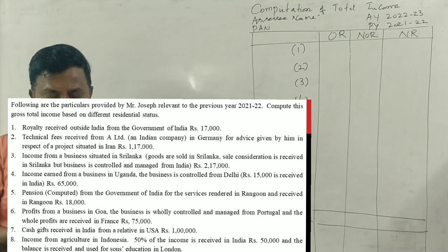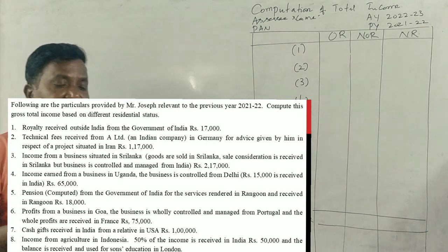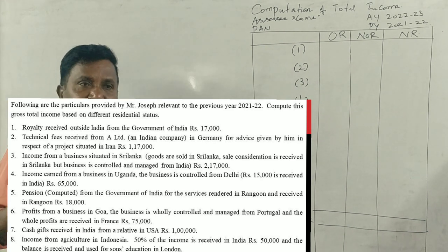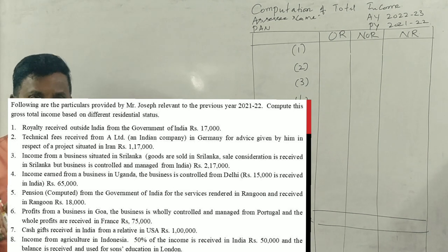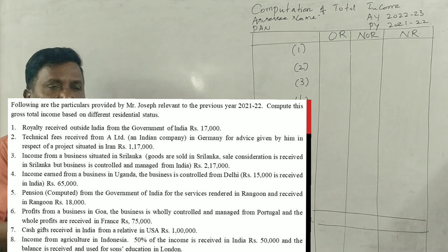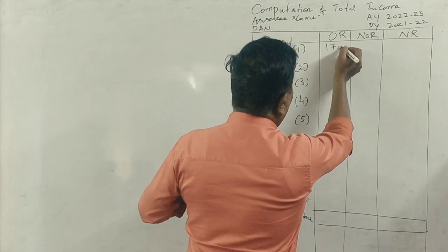So what is the first point? What is the second point? Royalty received outside India from the Government of India. The Government of India has royalty earned money, earned in India, received outside India. Any income which is earned in India is taxable in all the three cases. So total is 17,000. 17,000 is taxable in all the three cases.